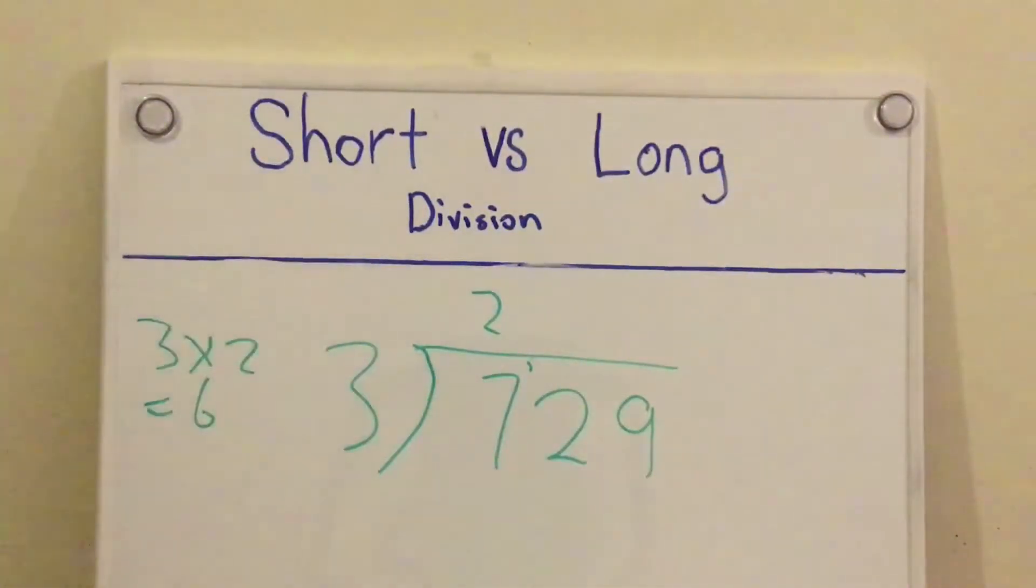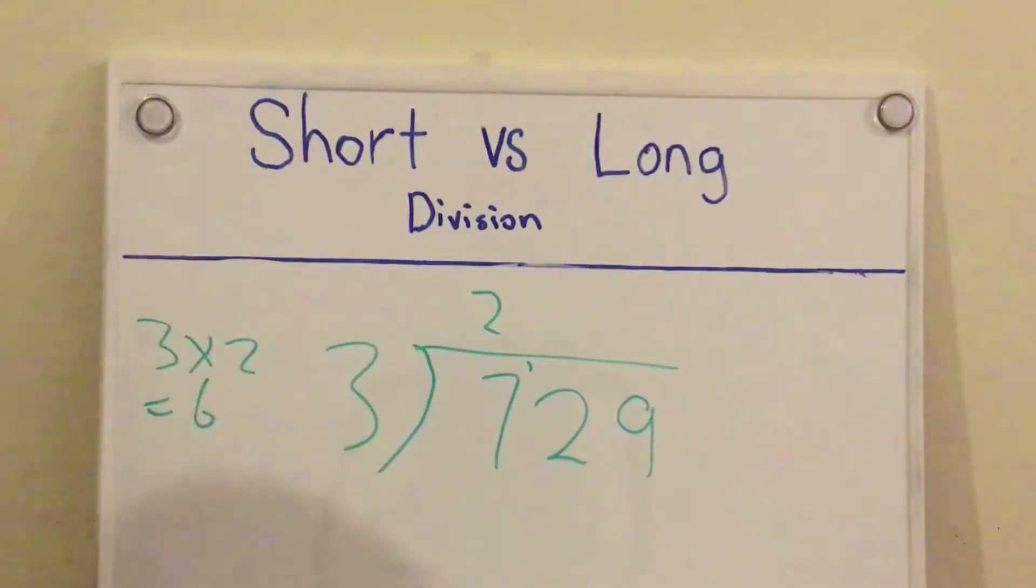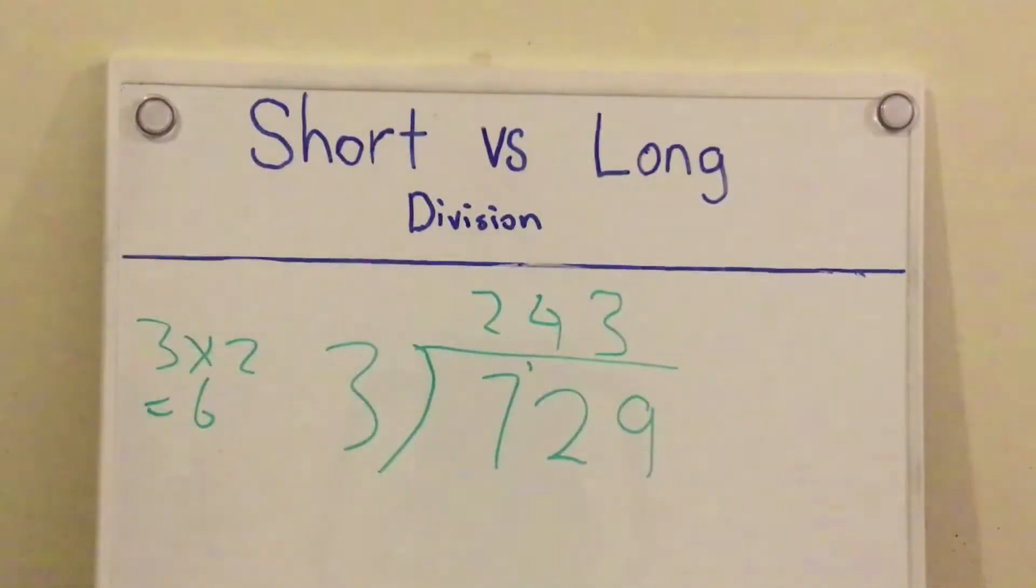So we put 1 at the top here, and then you go 12 divided by 3, which you get 4. And then 9 divided by 3, which you get 3. So that's basically short division.